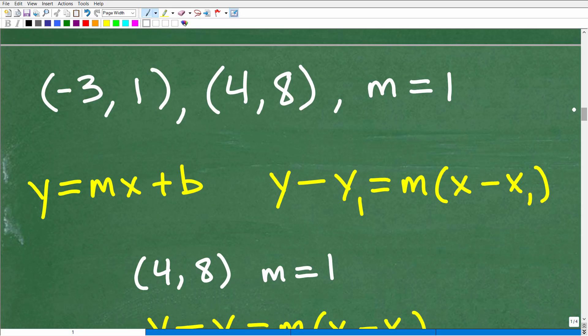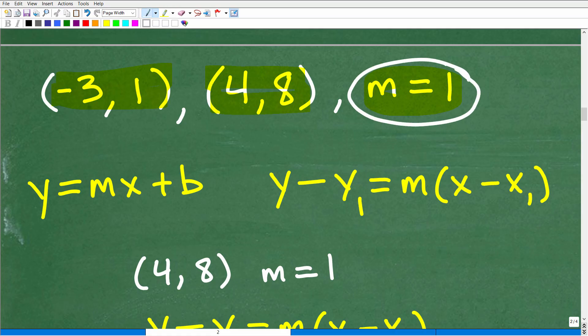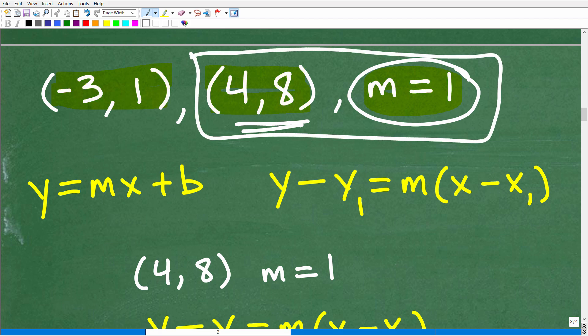All right, so the information we have is we have two points that are on this line now, and we know the slope. So remember, what we need is the slope for sure. Okay, that's non-negotiable, and we need one point that is on the line. Here we have two points. So you could just select either point. You can get the correct answer using this point or this point. So just try to identify the one that's a little bit easier to work with. I'm just gonna go ahead and use 4, 8.